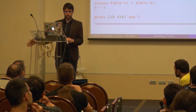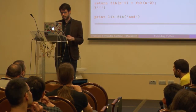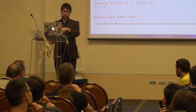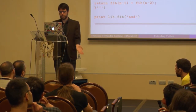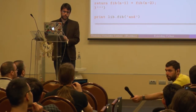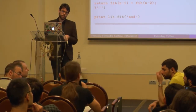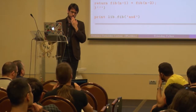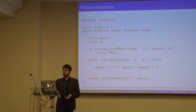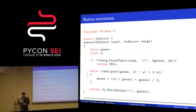Here we have the example and I'll try to explain what is what. First, we need to include the header Python.h, which gives us access to all these macros, functions, and runtime access. This header has the definitions of PyObject, PyArg_ParseTuple, and so on. Then this is our main function that will calculate the approximation.